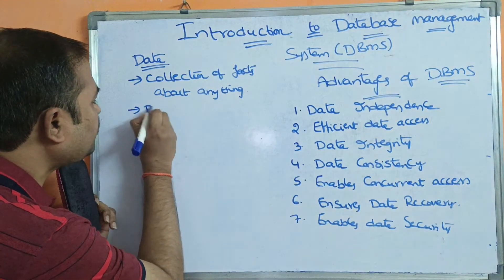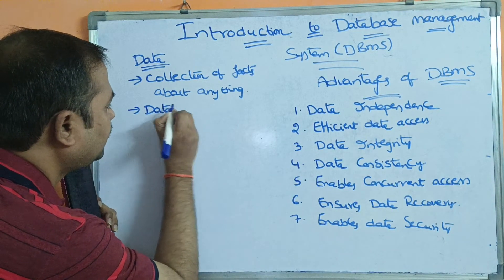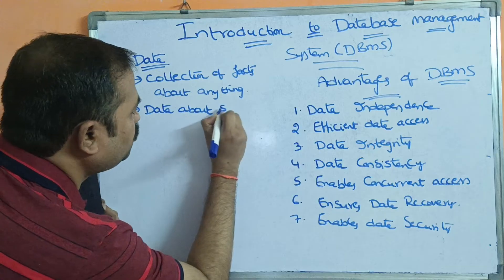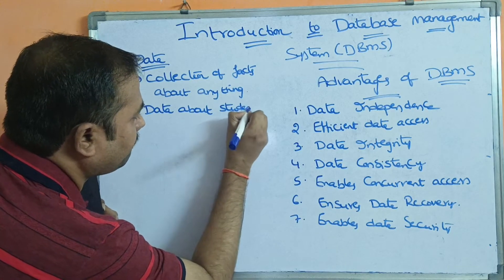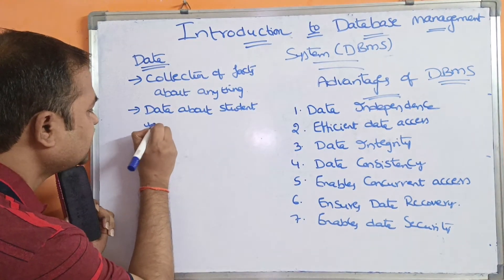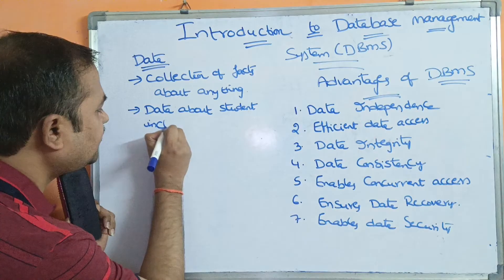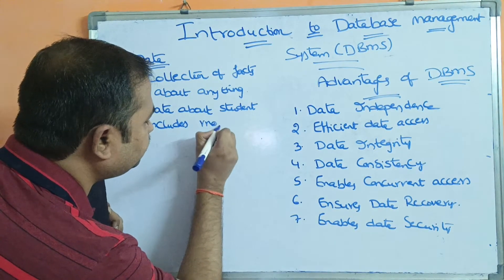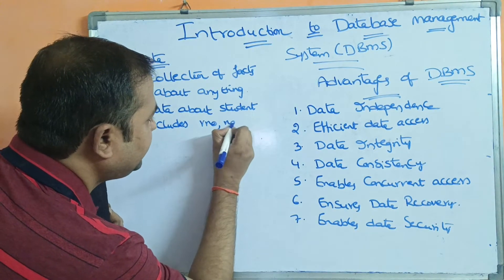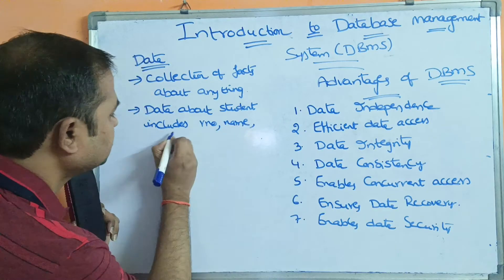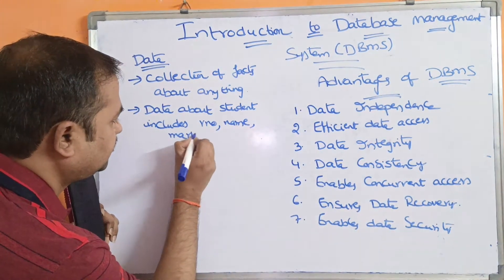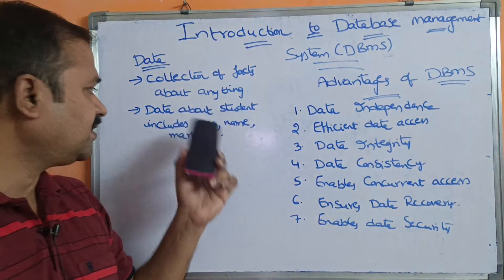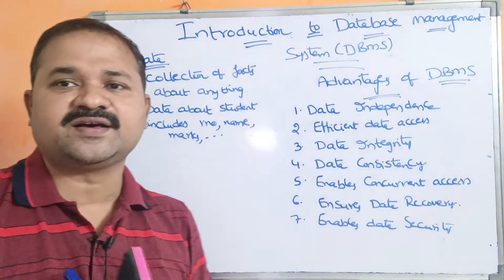Data about a student includes roll number, name, marks, etc. These are the main data fields of a student.